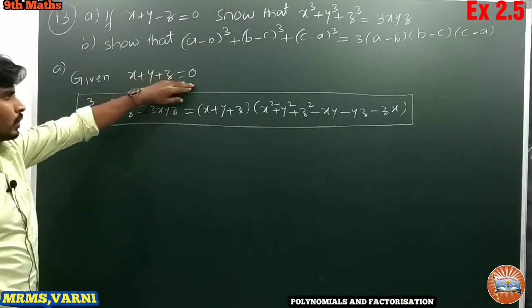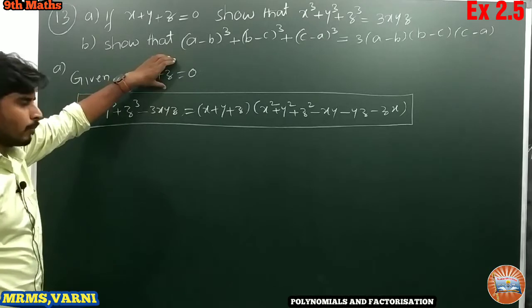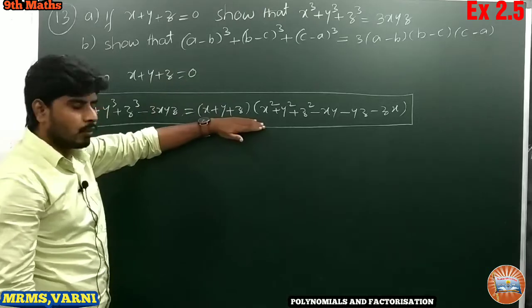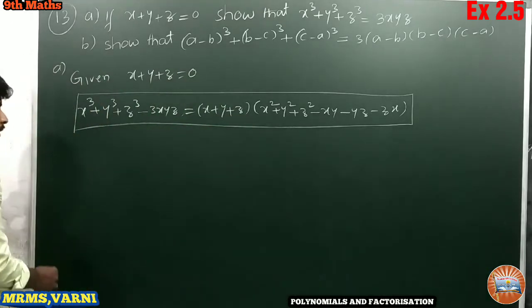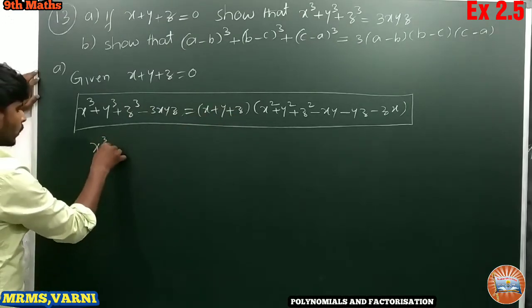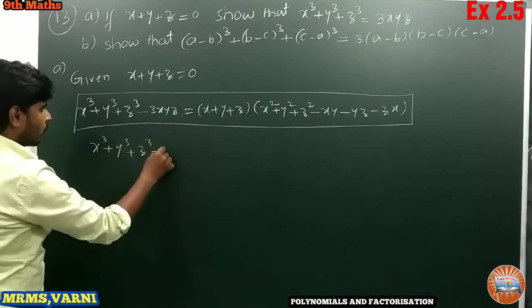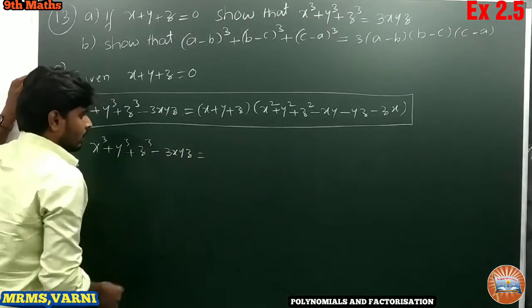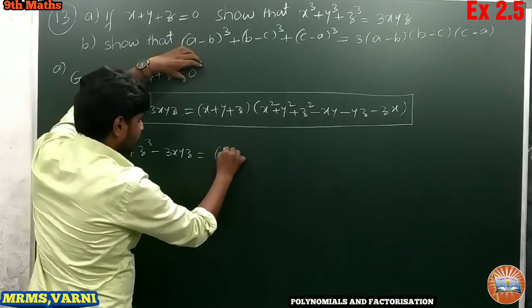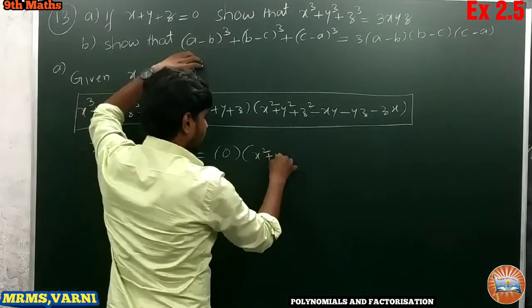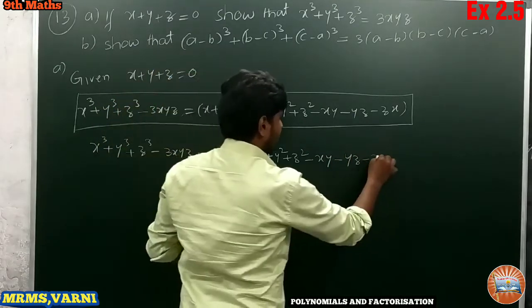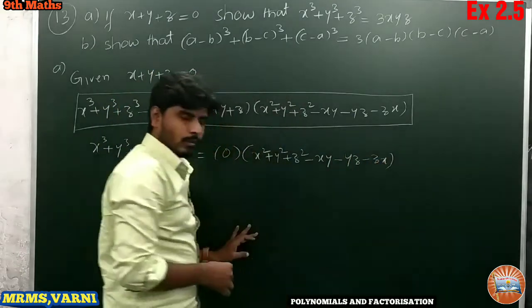Given x plus y plus z equals 0. With the use of this condition, I am replacing x plus y plus z equals 0 in this formula. I am substituting the value in this identity. So x cube plus y cube plus z cube minus 3xyz equals 0 into x square plus y square plus z square minus xy minus yz minus zx.